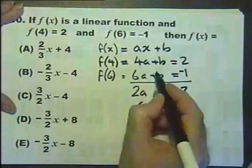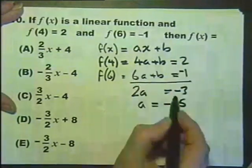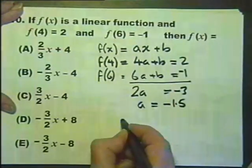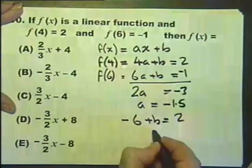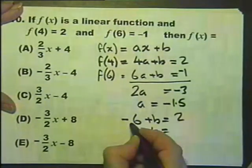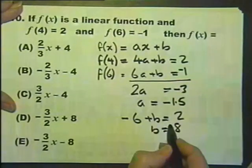Substituting that into the first equation: 4a is 4 times -1.5, which is -6, plus b equals 2. Therefore b equals 8, adding 6 to both sides.